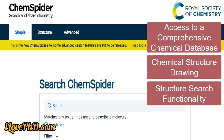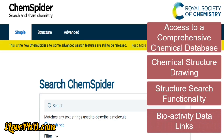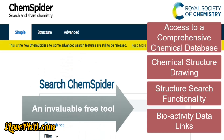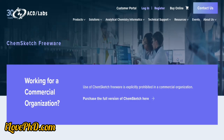ChemSpider is integrated with bioactivity data, linking chemical compounds to biological activities and related research, which is useful for drug discovery studies. In summary, ChemSpider is an invaluable free resource for chemical structure drawing and searching, offering access to an extensive chemical database, powerful search functionality, and detailed property data.